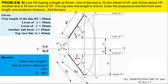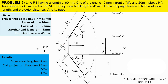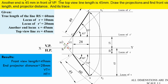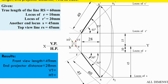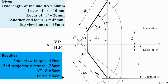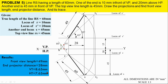The end projector distance is 28 mm. Measure the distance between the projectors R–R-dash to S–S-dash — this horizontal distance is known as the end projector distance. Also measure the vertical trace distance from the XY line — that is approximately 8.65 mm. Similarly, measure the horizontal trace distance — that is also 7.65 mm.